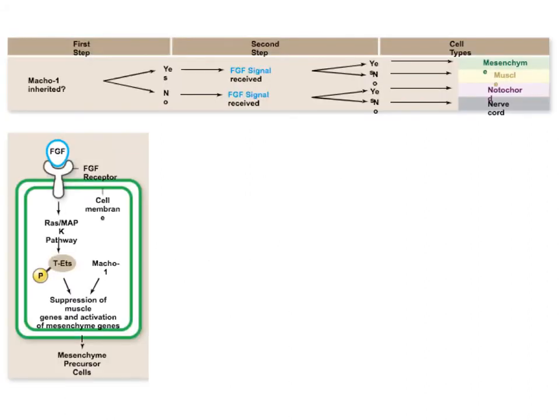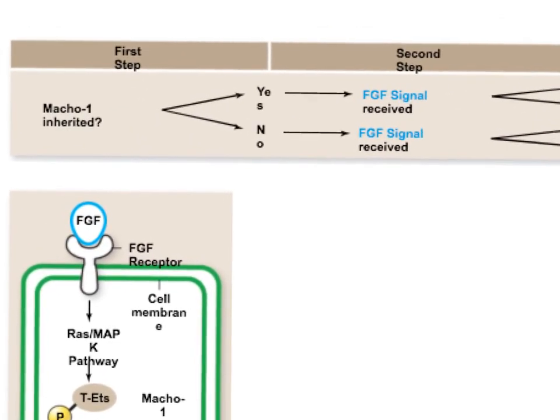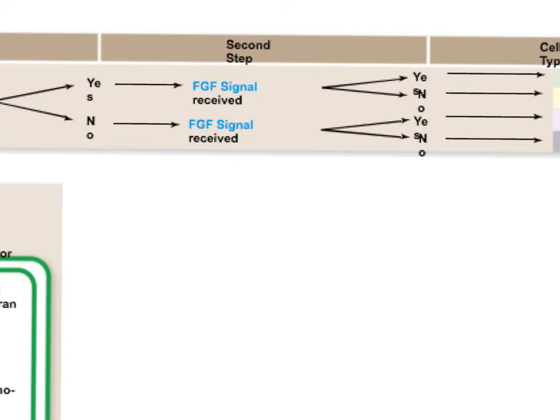In this example, cells can either have the cytoplasmic determinant or not — it's either present or it is not. And they can receive the signal from the neighboring cell or not.